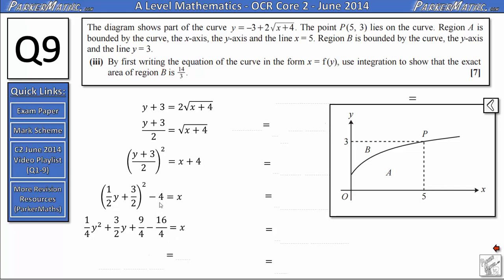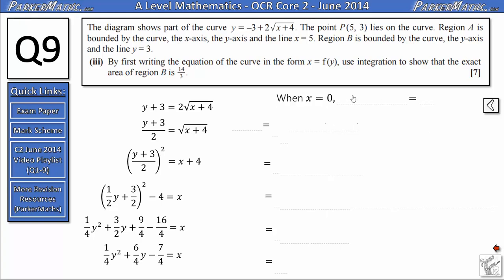The reason I've rewritten minus 4 as minus 16 over 4 is that I can now combine these constant terms a little bit easier. I can do 9 over 4, subtract 16 over 4, and that gives me negative 7 over 4. I'm also going to rewrite 3 over 2 as 6 over 4 here. Because now I've got a factor of a quarter within each of these terms, and I can bring that outside of my integration in a minute. Next, before I can integrate, I need to know my other limit. One of my limits is 3, but the other limit is this point here. To find this point, all I need to do is substitute x equals 0 into my equation up here. So, when x equals 0, we get negative 3 plus 2 root 4, which gives us 1.